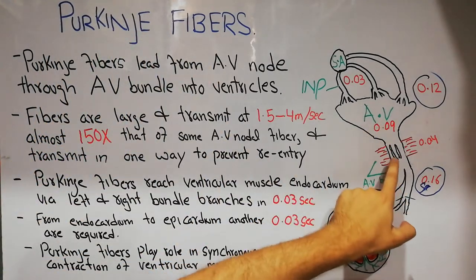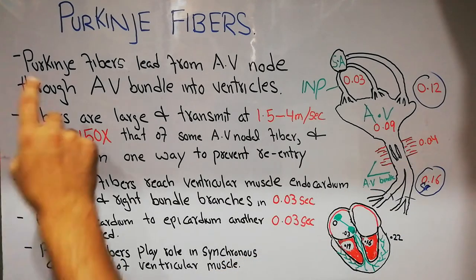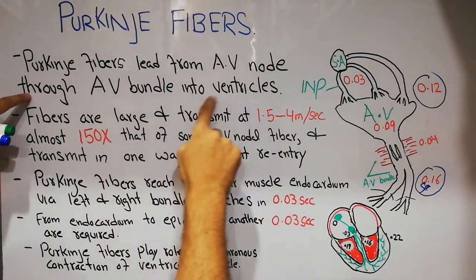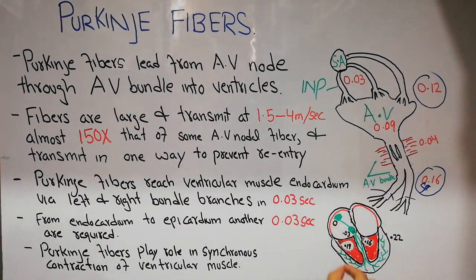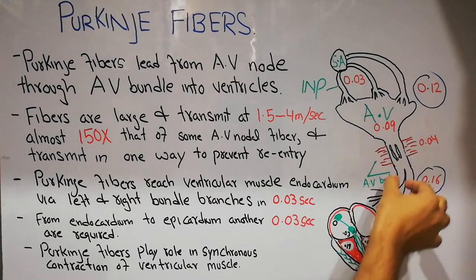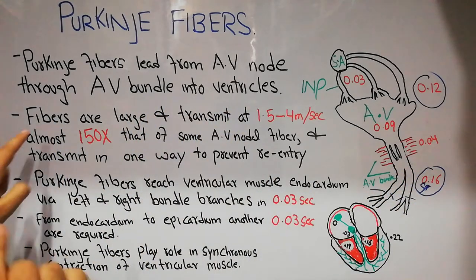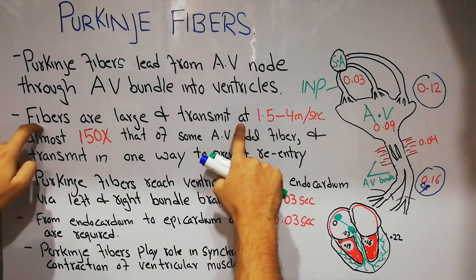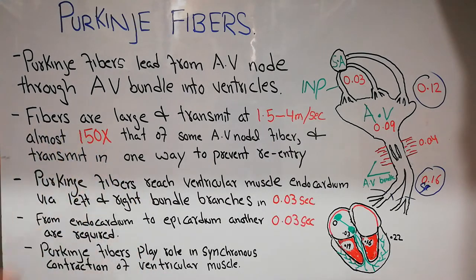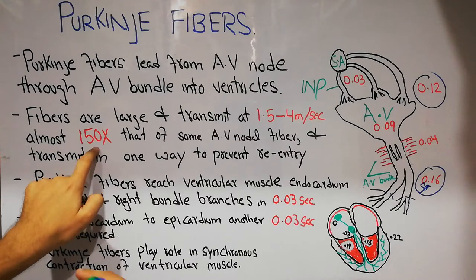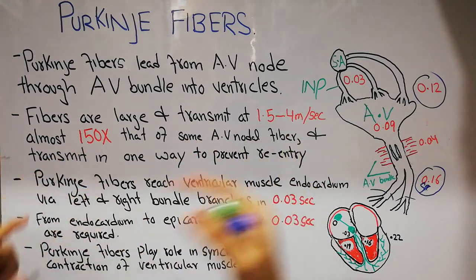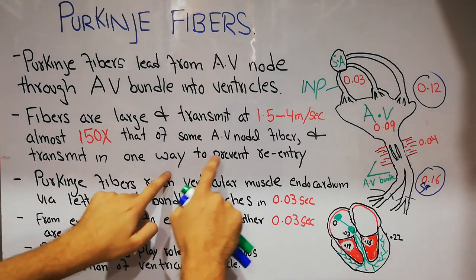The Purkinje fibers are present in the AV bundle branches and the atrioventricular bundle. The Purkinje fibers lead from the atrioventricular node through the AV bundle into the ventricles. These fibers are large in size and transmit the signal at about 1.5 to 4 meters per second — approximately 150 times greater than that of the atrioventricular fiber. They transmit in one way to prevent re-entry.